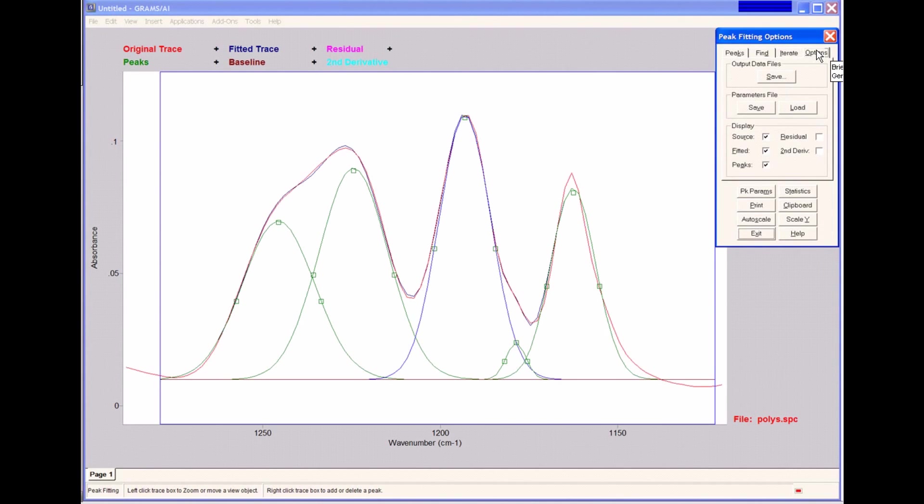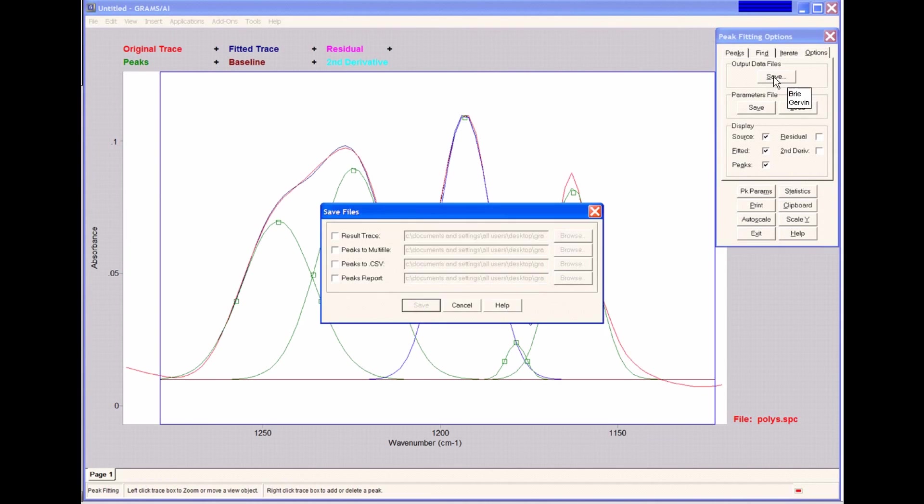If we go to the options tab, we can choose to save some of our outputs from our fit. If we click save, we can choose to save various files. We can save the result trace, which is that fitted trace in the dark blue that we saw. The peaks to a multi-file will save each peak as a separate sub-file in a Grams multi-file, as well as the baseline. So you end up with a multi-file, in our case, for this fit, with six separate sub-files, so we can maintain each peak separately.